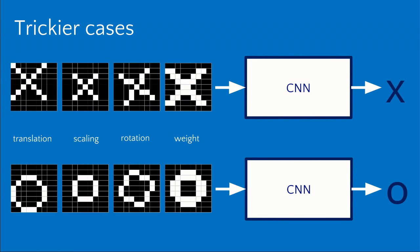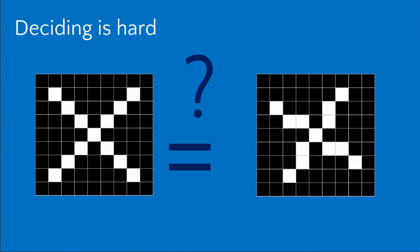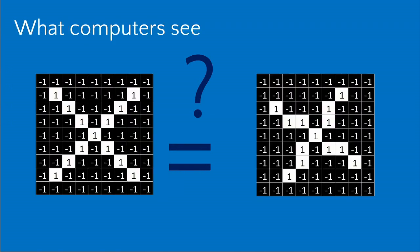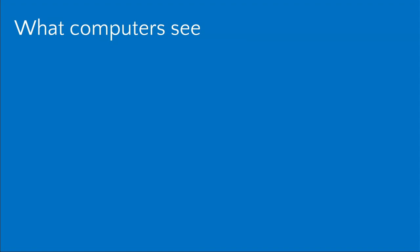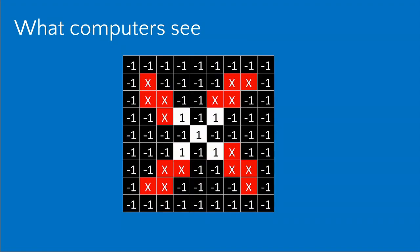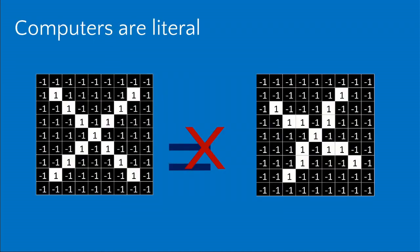A human has no problem looking at these and deciding, but for a computer this is much harder. When trying to decide if two images are equal, it goes through pixel by pixel — black pixels might be minus one, white pixels plus one — and it compares them pixel by pixel, finding the ones that match. The red pixels are the ones that don't match, so a computer looking at this would say these are not the same.